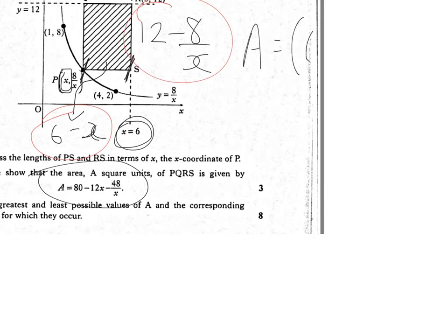So area will be equal to 6 minus x bracket 12 minus 8 over x. I'm going to use FOIL method to expand this one out. So 6 times 12 is 72.